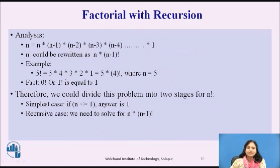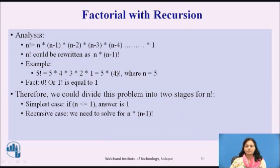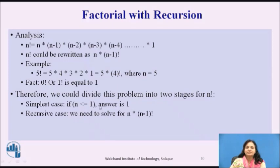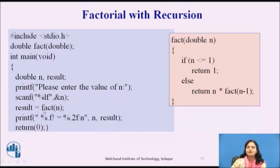Now we will see how recursion works. Instead of 5 into 4 into 3 into 2 into 1, we replace it by 5 into 4 factorial. Like this, it can be cut down into a simpler calculation function, and the last simplest case will give the answer and pass it back to the next step. This analysis gives us n into (n-1) into (n-2), and so on, which is replaced by this recursion. The simple base case answer is 1.